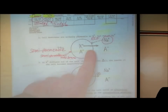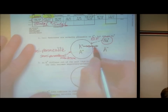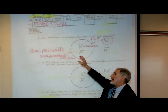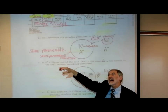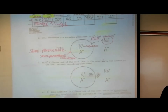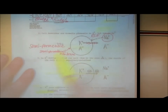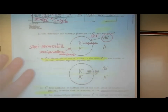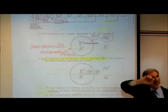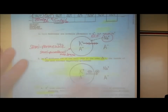The only ion channels that are normally open are potassium ion channels, and potassium tends to diffuse out of the cell. Why? Because there's a higher concentration of potassium inside than outside the cell and the ion channel is wide open. As the potassium ions diffuse out of the cell due to the concentration difference, the inside of the cell becomes negatively polarized.